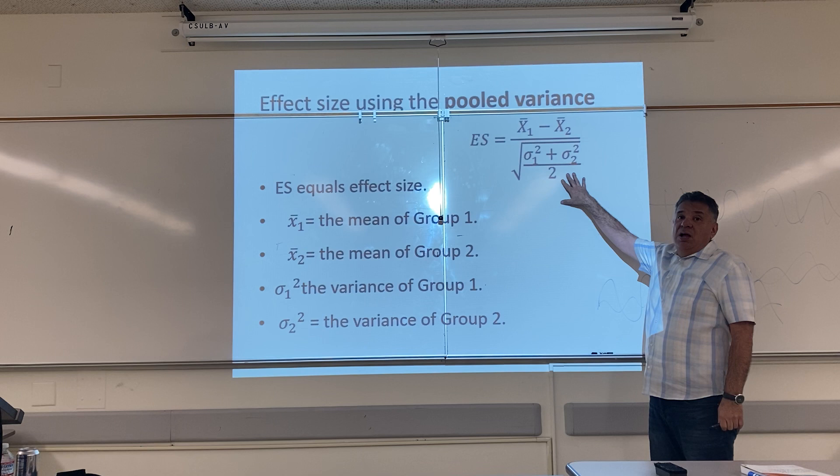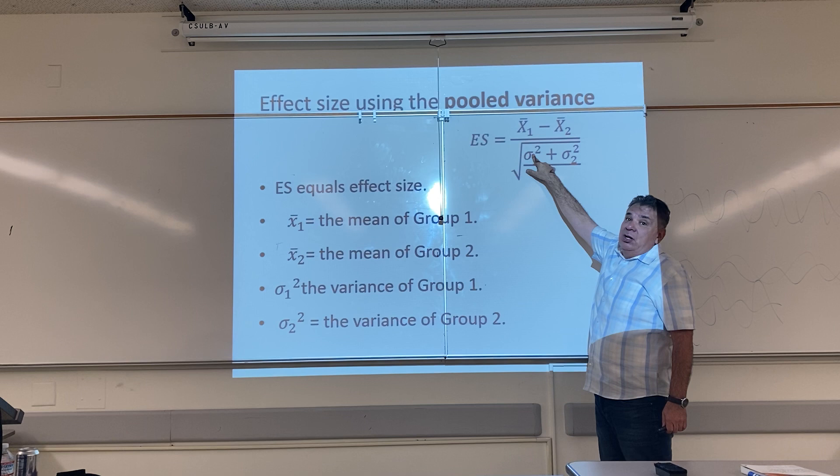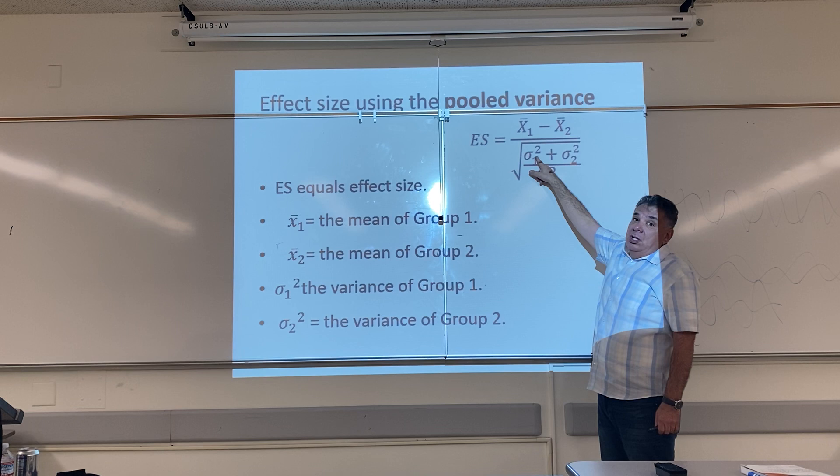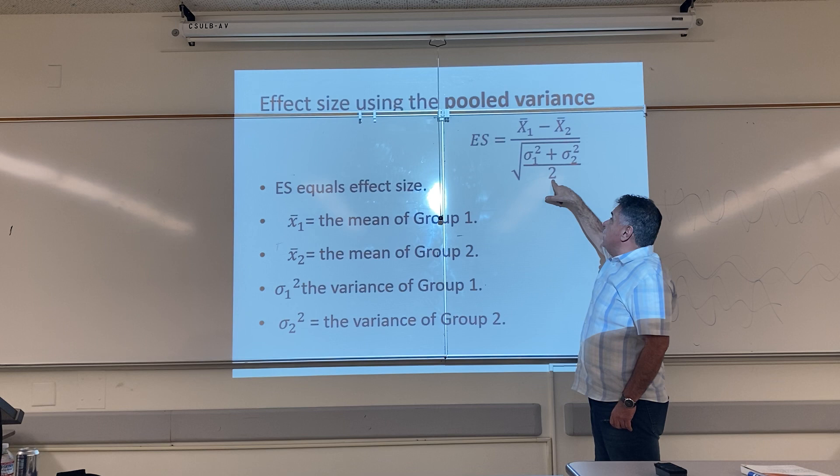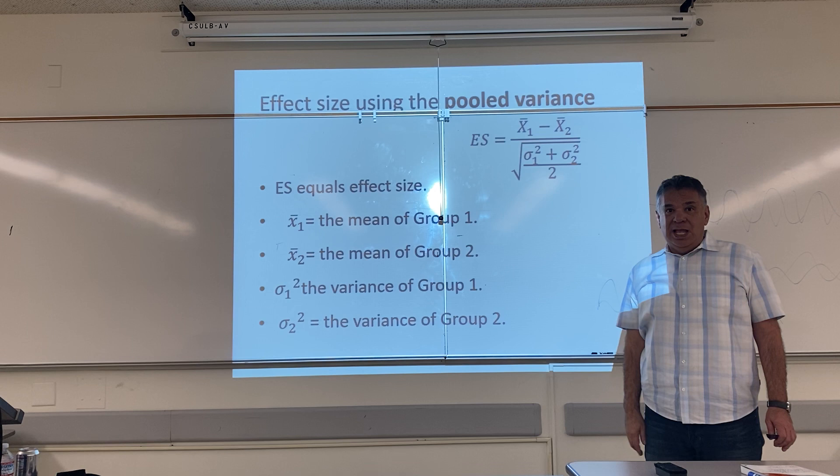Look at what we have here. The author changes the symbols — he's using lowercase sigma. This is actually the variance of group one plus the variance of group two. He's adding the variances and then dividing by two, so he's taking the average variance, and then taking the square root of the average variance to find the average standard deviation.